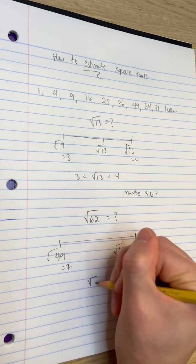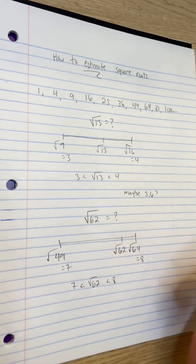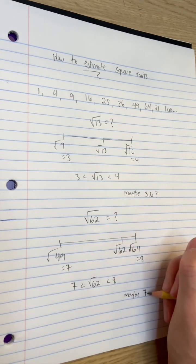So the square root of 62 must be greater than 7 but less than 8. I'll guess 7.8 or 7.9. Boom.